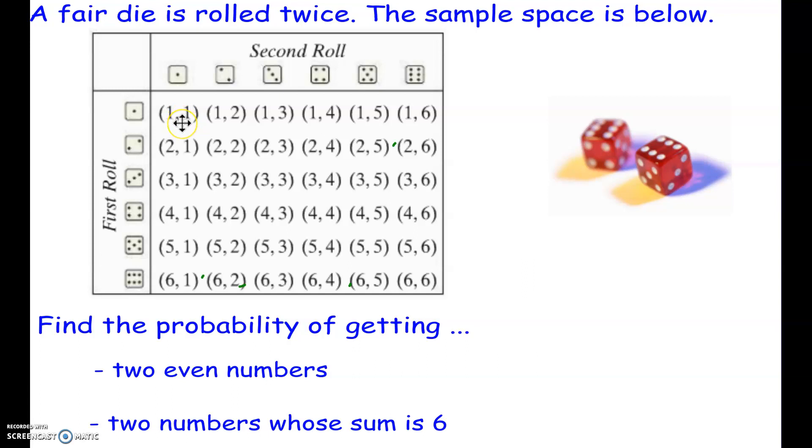And then we can say 1, 1 means I roll a 1 and then another 1. A 1, 2, I roll a 1 and then a 2, and so on down the line. So we're going to come up with a total of 36 outcomes when we list them all out.